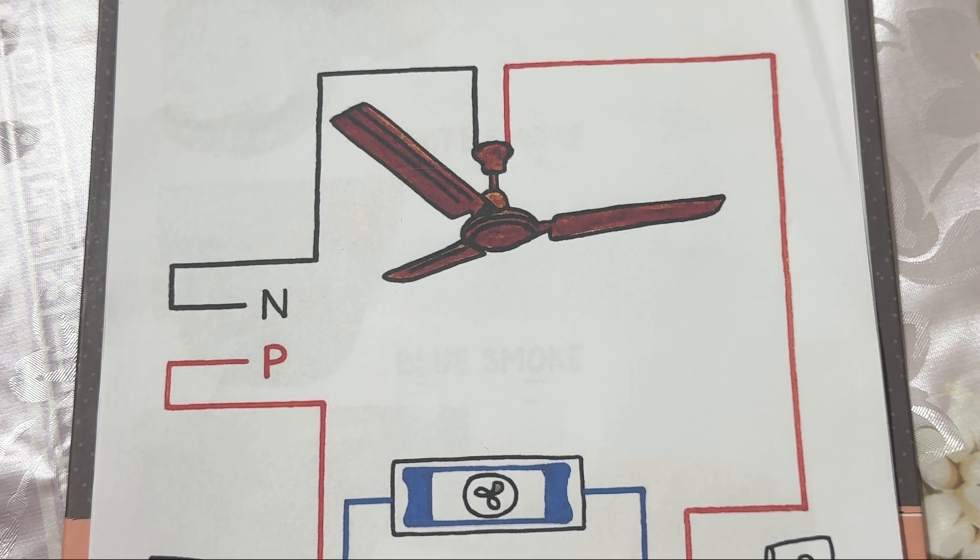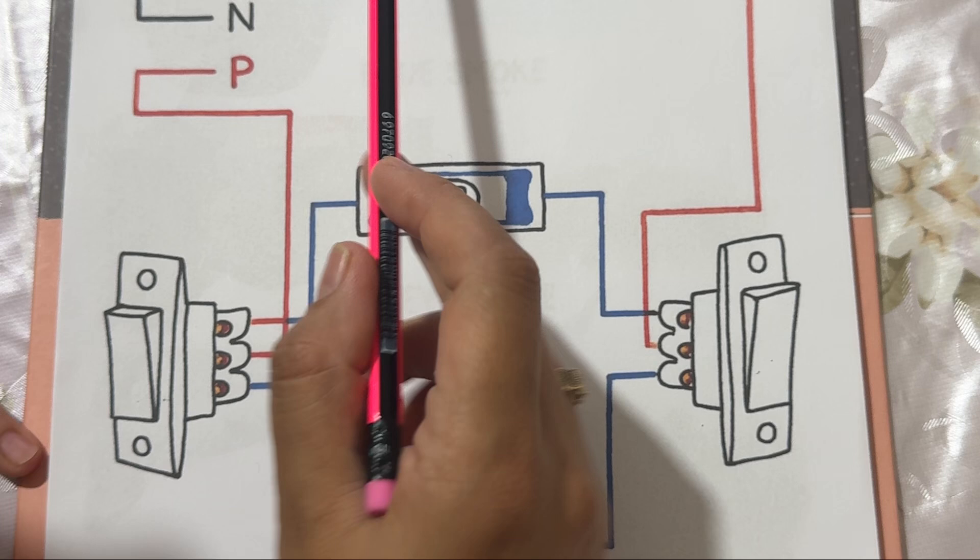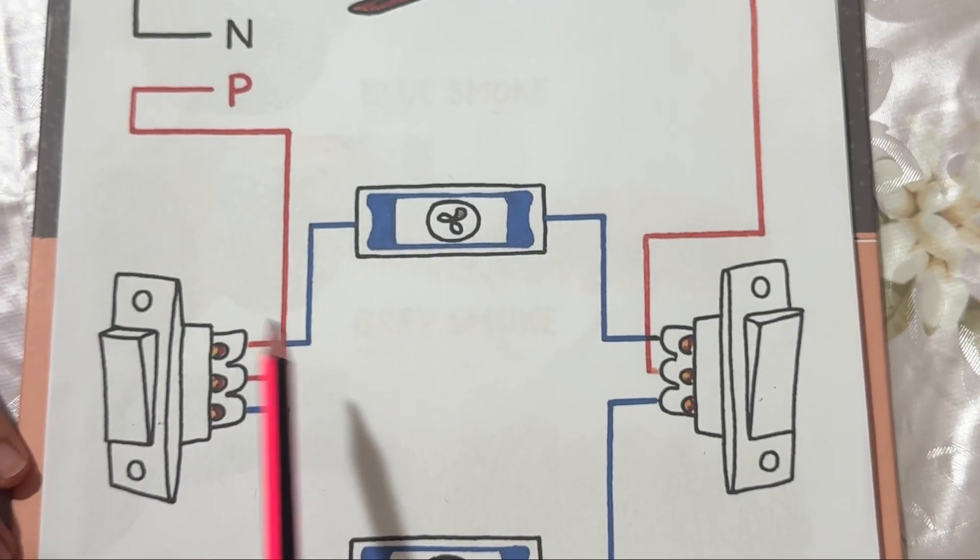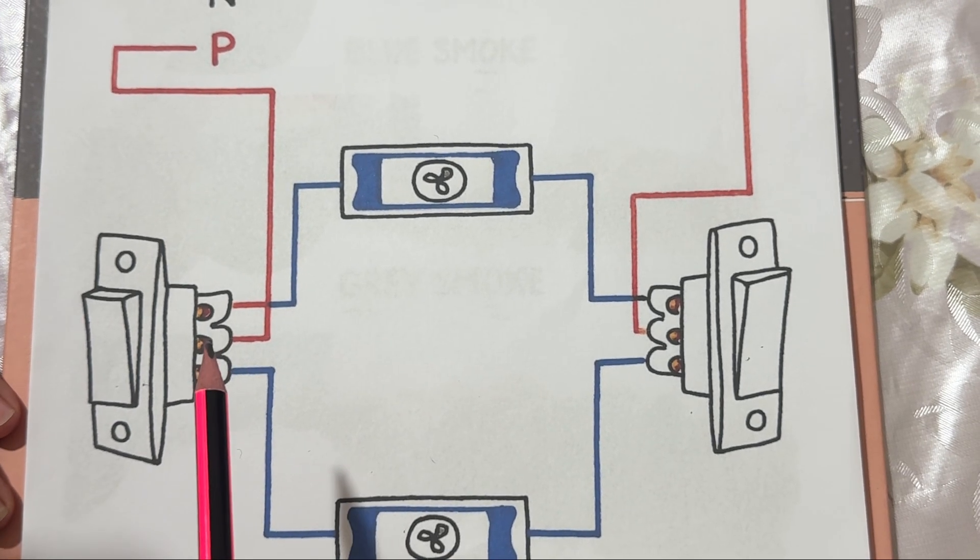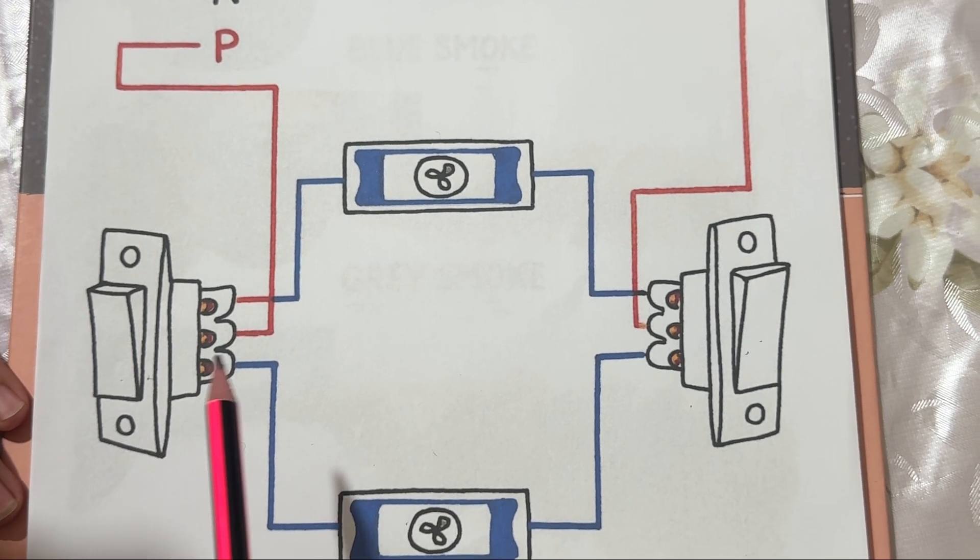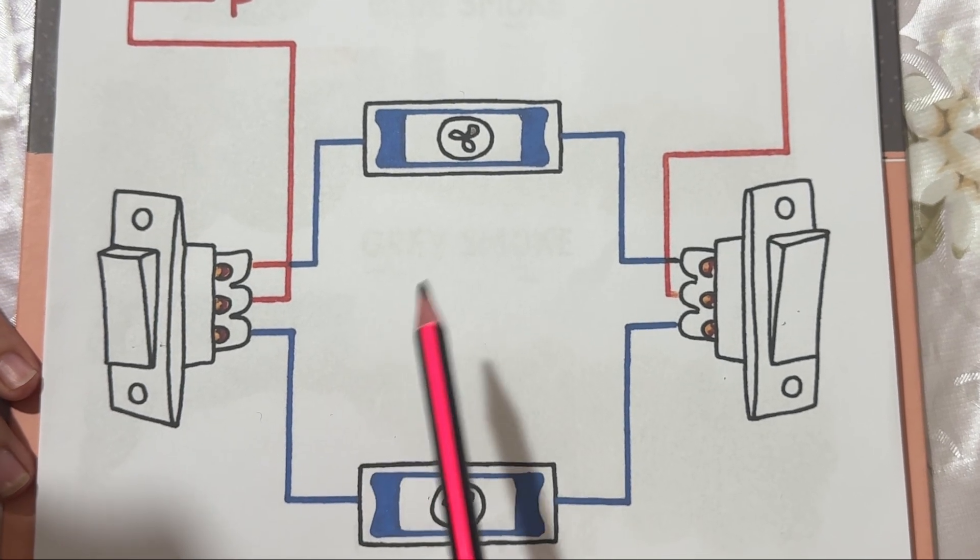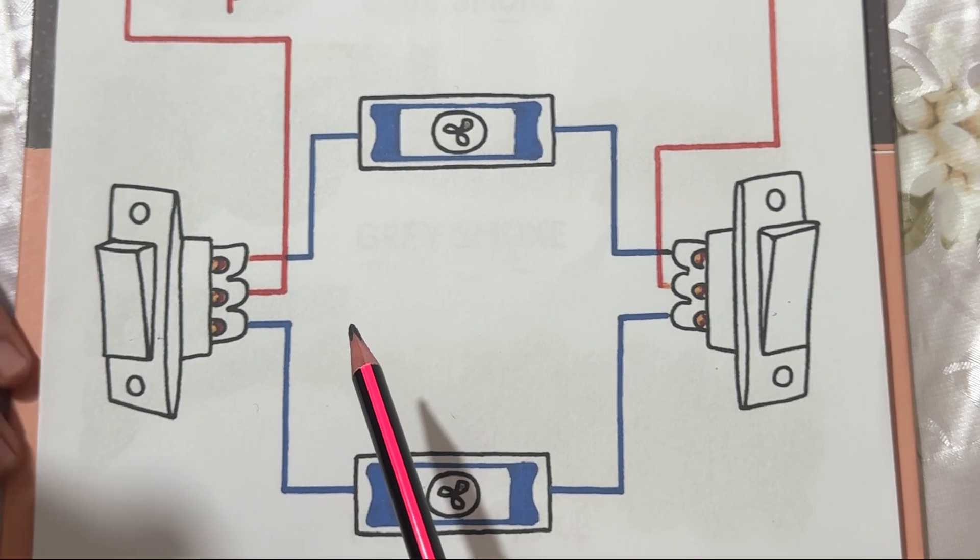This wiring system allows you to control the fan from different locations, which is convenient in large rooms or halls. You can adjust the speed of the fan independently using either regulator, ensuring flexibility and comfort in daily use.